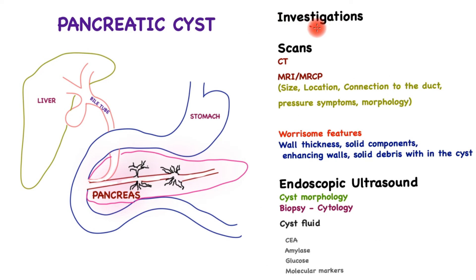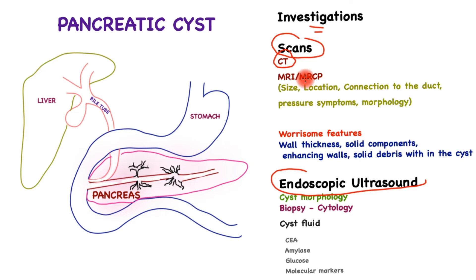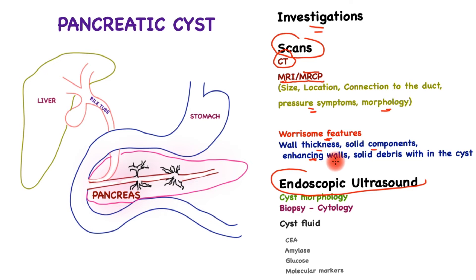So how are pancreatic cysts investigated? Typically this is by way of scans or endoscopic ultrasound. For scans to be effective, specifically the CT scan, it has to be performed with a pancreas protocol contrast scan. Additionally, MRI — the MRCP — provides additional information. The scans delineate the size, location, connection to the main pancreatic tube, whether they are responsible for pressure symptoms, and the morphology of the cyst and likely diagnosis. Worrisome features on scan include wall thickness, solid components within the cyst, contrast uptake by the cyst wall, and solid debris within the cyst — all of which may suggest malignancy or malignant potential.